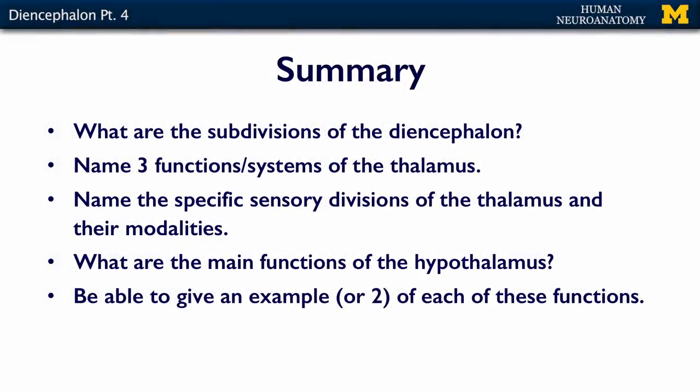In summary, what you should know about the diencephalon: What are its subdivisions? Name three of the functional systems associated with the thalamus. Name the specific sensory divisions of the thalamus and their modalities. What are the main functions of the hypothalamus, and be able to give an example of one or two of these functions. If you have a grasp on these main concepts, then you're ready for the assessment.